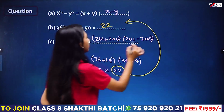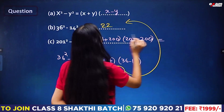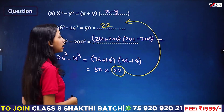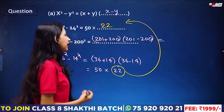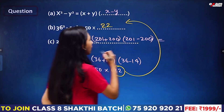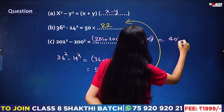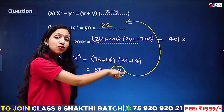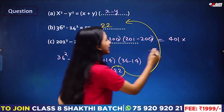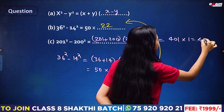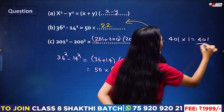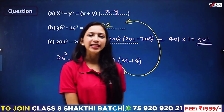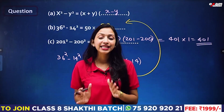Now, 201 plus 200 into 201 minus 200. That gives us 401 into 1, which equals 401. That is the answer to the second question. It's very simple.